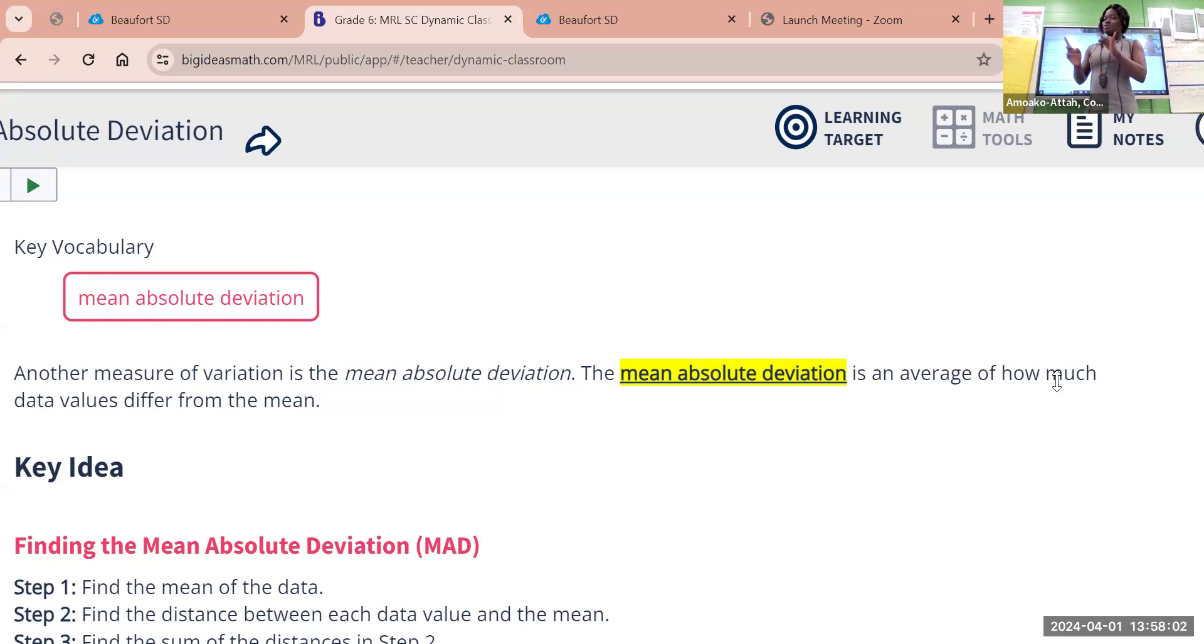There are four key ways that you look for when you're calculating the mean absolute deviation. What are these steps? One, you find the mean. Two, find a distance between the data value and the mean. Three, you find the sum of all the distance that you find. Then the last one is, you divide it by, divide your answer in step three by the data values, number of data values you have.